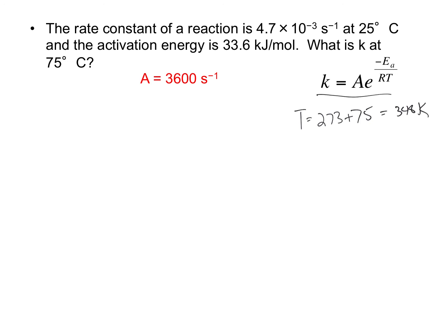I don't need to rearrange everything, my equation's already solved for K, so my new rate constant is going to be 3600 E to the minus 33600 over 8.314 times 348.